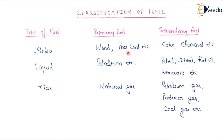Coal has different forms: peat, lignite, anthracite, and bituminous. Peat is raw coal — processed naturally, not in any plant. Secondary fuels are produced by processing primary fuels. For solid secondary fuels, there are coke, charcoal, anthracite, and bituminous coal. For liquid secondary fuels: petrol, diesel, fuel oil, kerosene, etc. Secondary fuels are produced by the processing of primary fuels.